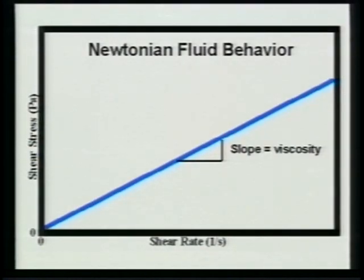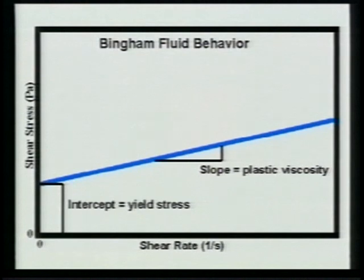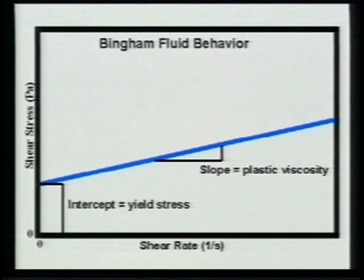A flow curve is determined by plotting shear stress against strain rate. The classical flow curve for a simple liquid is a straight line with zero stress at zero strain rate. Viscosity is the slope of this line — this simple flow curve describes Newtonian behavior. Many liquids have more complex behavior. In this example, some stress is required before any flow occurs; this stress is called the yield stress. The suspension acts like a solid below its yield stress, but like a liquid when applied stress exceeds the yield stress. This type of response is called Bingham or plastic behavior.